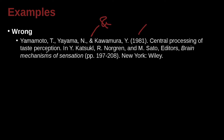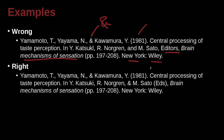Central processing of taste perception — that's the chapter name or article name. In this case, it's inside of — in — Y. Katsuki, and R. Norgren, and M. Seto, editors. Brain mechanisms of sensation, that's the book name. New York: Wiley — that's the location and the publisher. APA is very clear that editors should be written as 'eds.' inside parentheses. We've got to remember that.